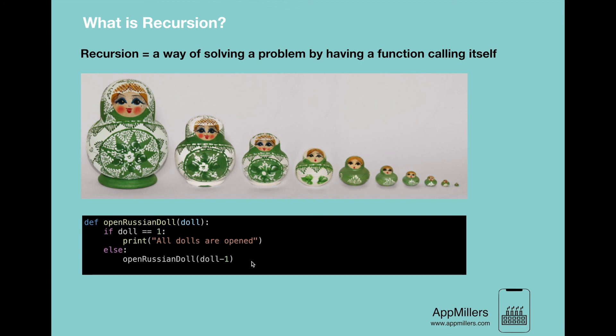Let's recap what we have learned here. By definition, recursion is a way of solving a problem by having a function call itself. We provided the real-life example of Russian dolls, which makes understanding the logic of recursion easy. That's all for this lecture. Hopefully you understand the logic behind recursion. If you still have problems understanding recursion, don't worry — we will talk about it in a lot more detail in the next videos.